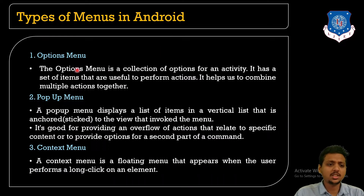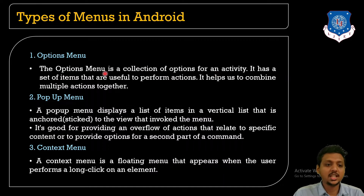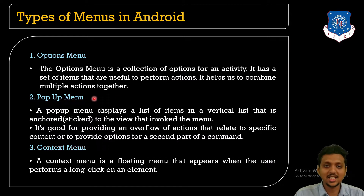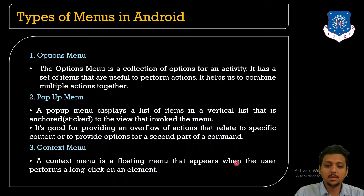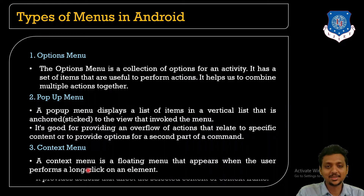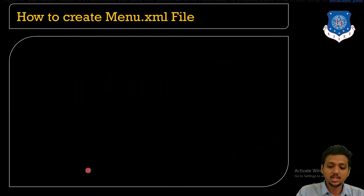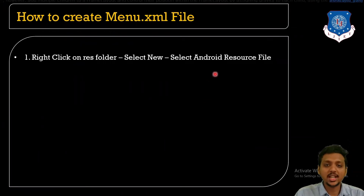The option menu is a collection of options for each and every activity — it has a set of items useful to perform actions and helps combine multiple actions together. The pop-up menu displays a list of items in a vertical list anchored to a view. The context menu is a floating menu that appears whenever the user performs a long click on any element.